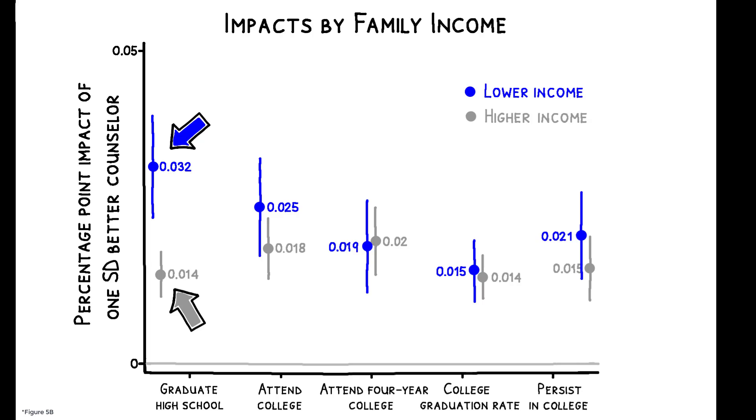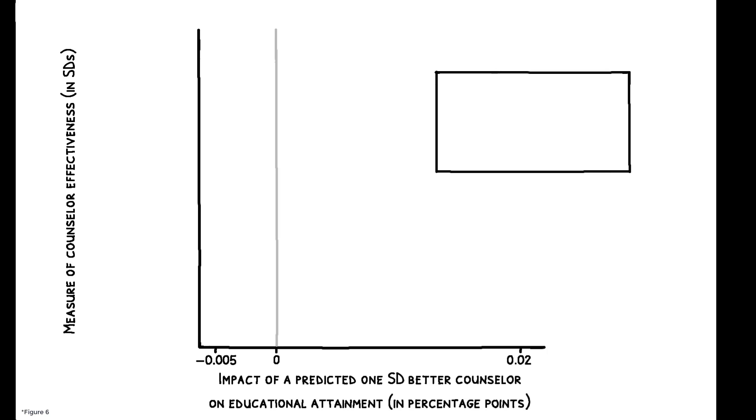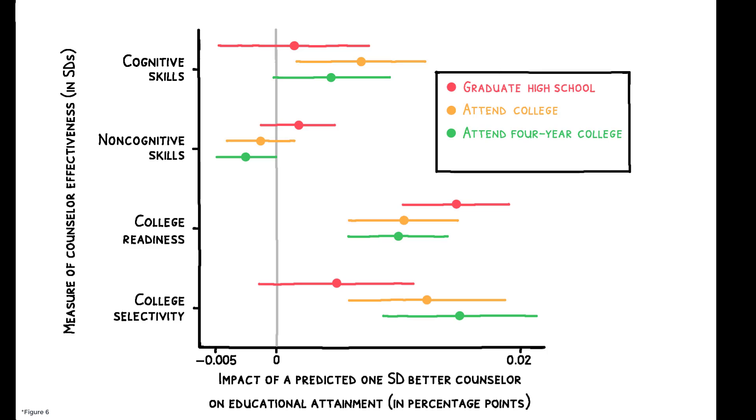These patterns suggest that counselors may be an important resource for closing socioeconomic gaps in education. This figure explores which aspects of a counselor's role are most important by showing how different dimensions of counselor effectiveness are related to four key elements of students' educational attainment.